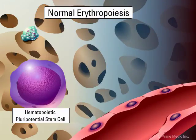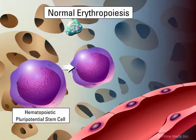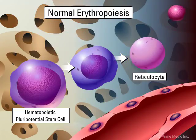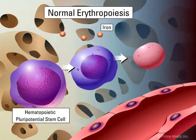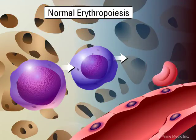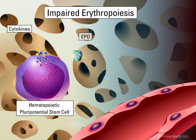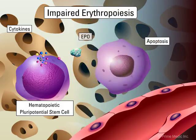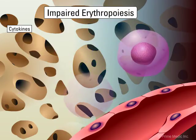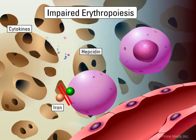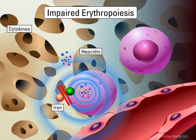Erythropoietin acts on pluripotent stem cells to produce red cells. Iron is taken up by the reticulocytes for insertion in the porphyrin ring to complete the formation of the red blood cells. Cytokines reduce the sensitivity of the bone marrow to the actions of erythropoietin and therefore impair red cell formation. Cytokines also impair the uptake of iron to stem cells and reticulocytes and affect reticulocytes directly. The impaired erythropoiesis further contributes to the anemia.